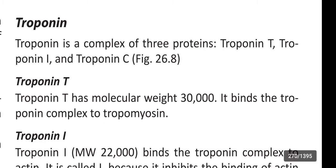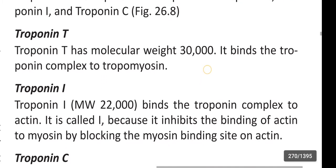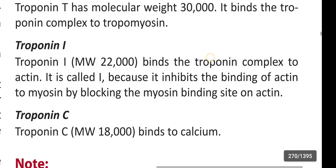Troponin is a complex of three proteins: Protein T, Protein I, and Protein C. Troponin T has a molecular weight of 30,000. It binds the troponin complex to tropomyosin and troponin I.